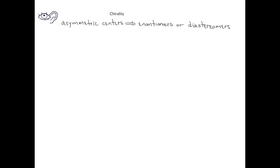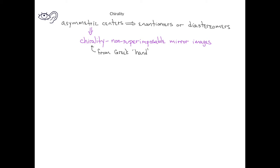We've already learned that if a molecule has an asymmetric center, it can lead to enantiomers or diastereomers. But why else is it important to identify asymmetric centers in molecules? From a chemical standpoint, if a molecule has an asymmetric center, it introduces something called chirality to the molecule. Chiral objects are non-superimposable mirror images, or essentially enantiomers. The word chiral comes from the Greek word 'cheir' for hand, so chiral objects are things that can have left- or right-handed versions of them, such as your hands.